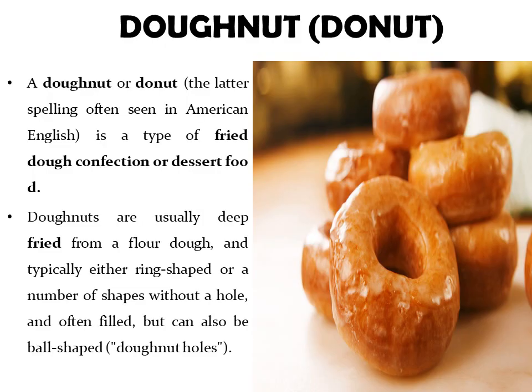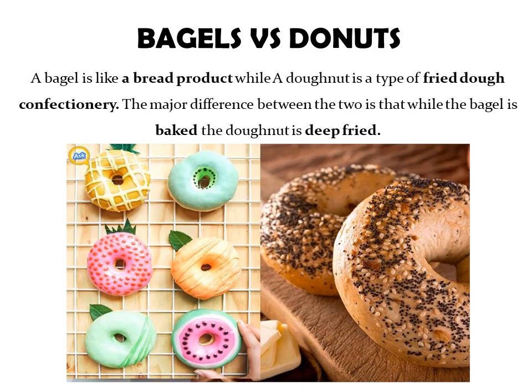On number eleven, we have doughnut. A doughnut is a type of fried dough confection or dessert food. Doughnuts are usually deep fried from a flour dough and are typically either ring-shaped or various shapes without a hole, and often filled, but can also be ball-shaped. You may be confused between a bagel and a doughnut as they appear somewhat similar, but there is a difference: a bagel is a bread product while a doughnut is a type of fried dough confectionery. The major difference is that while the bagel is baked, the doughnut is deep fried.